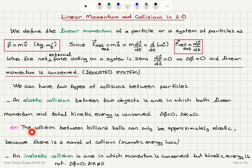A good example is the collision between billiard balls. However, the collision between billiard balls can only be approximately elastic. If we ignore effects such as friction with air, we still have the sound of the collision — that means there is an acoustic energy loss. So strictly speaking, we cannot have exactly kinetic energy conservation, and it would be only an approximately elastic collision.